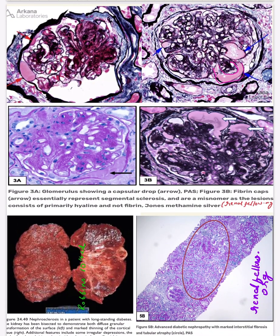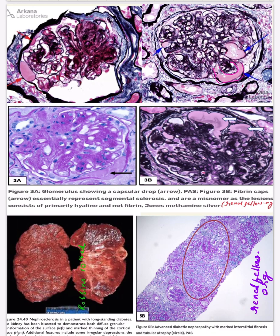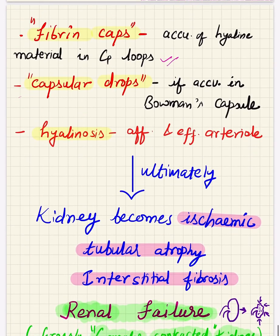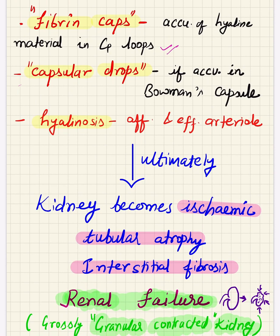This picture shows the capsular drop — proteinaceous material deposited in the capillary loops and also deposited within Bowman's capsule. This is the capsular drop; this is the fibrin cap. All these lesions ultimately cause ischemia of the kidney. The kidney has a granular and scarred appearance on gross examination, and the cortex is thinned out. Cortical cysts can be seen when there is pyelonephritis. The tubules ultimately get atrophied. So all these morphological events cause ischemia of the kidney leading to tubular atrophy and interstitial fibrosis, ultimately causing end-stage renal disease.